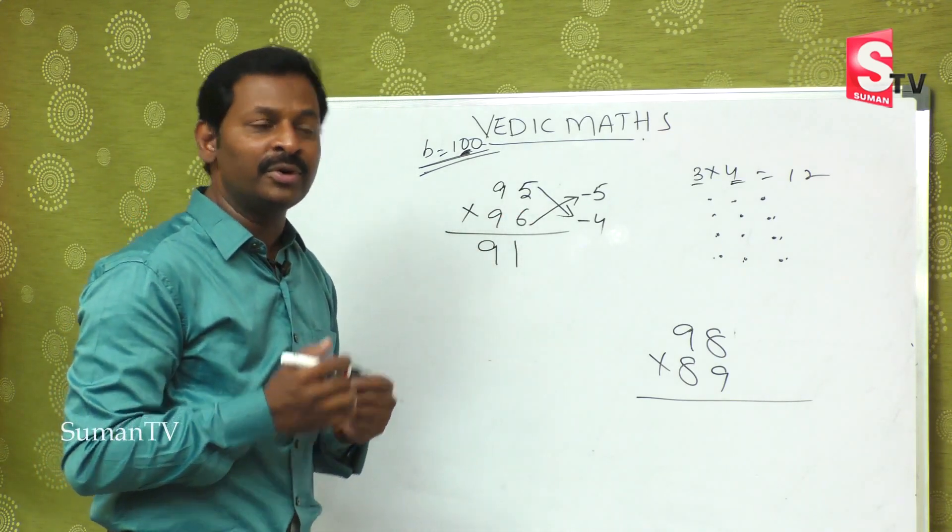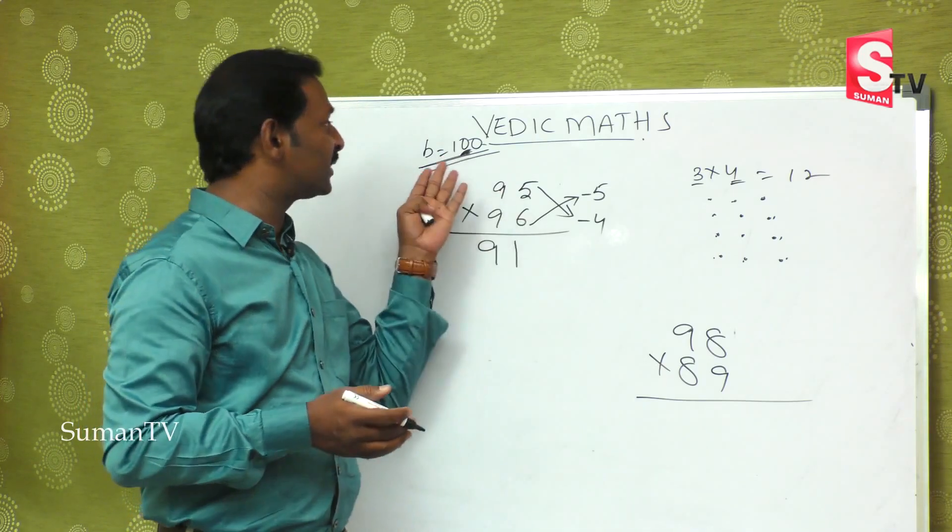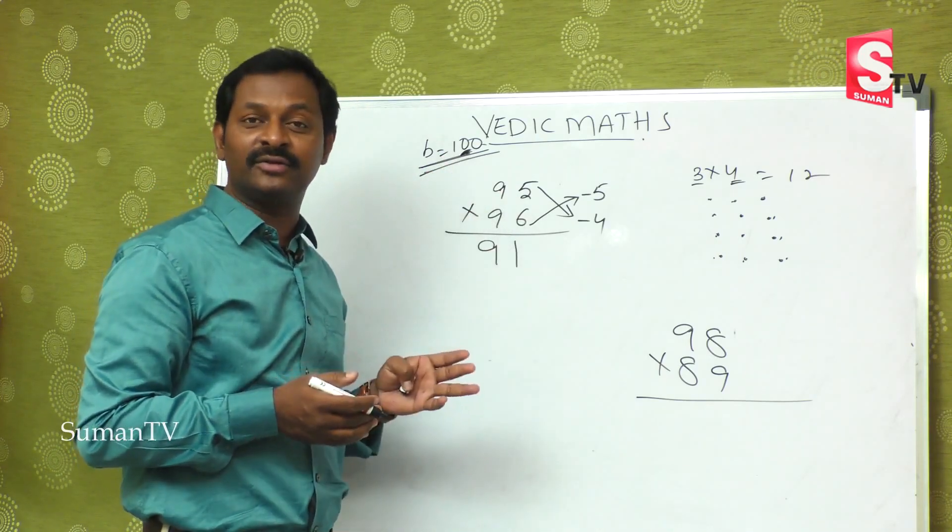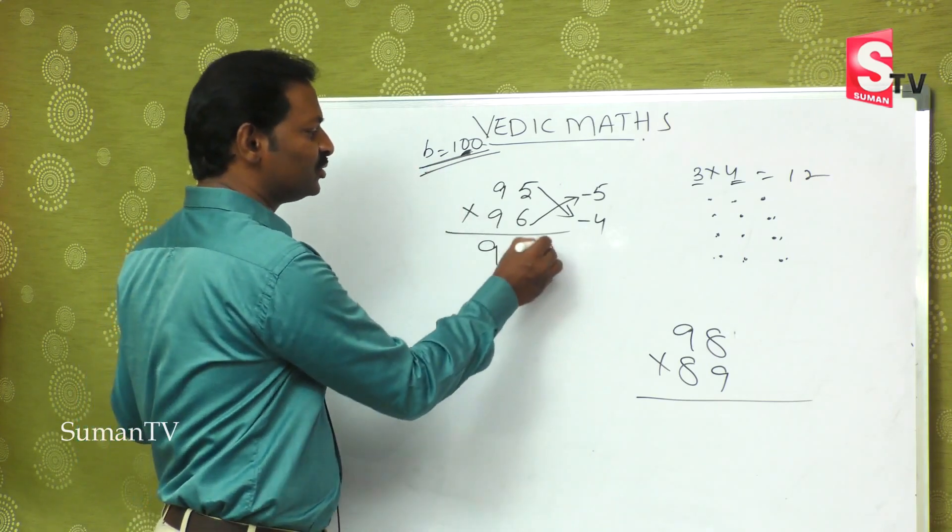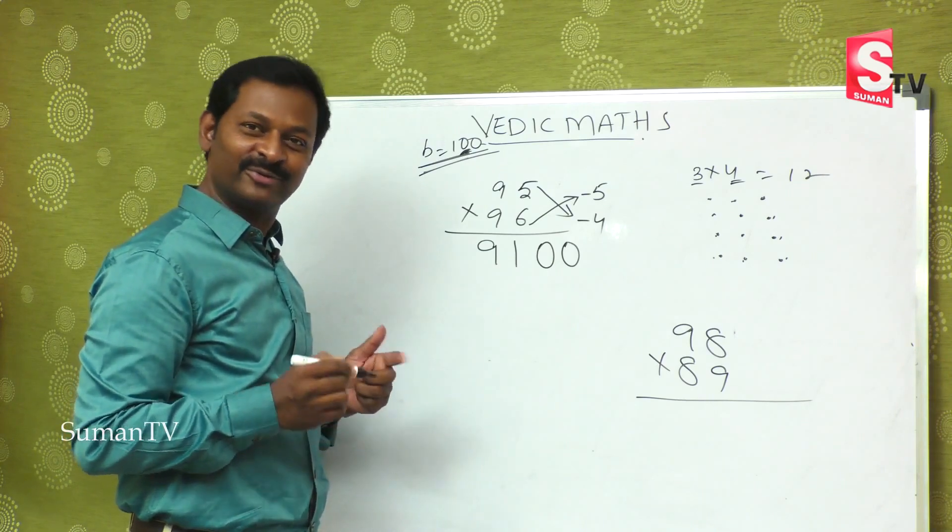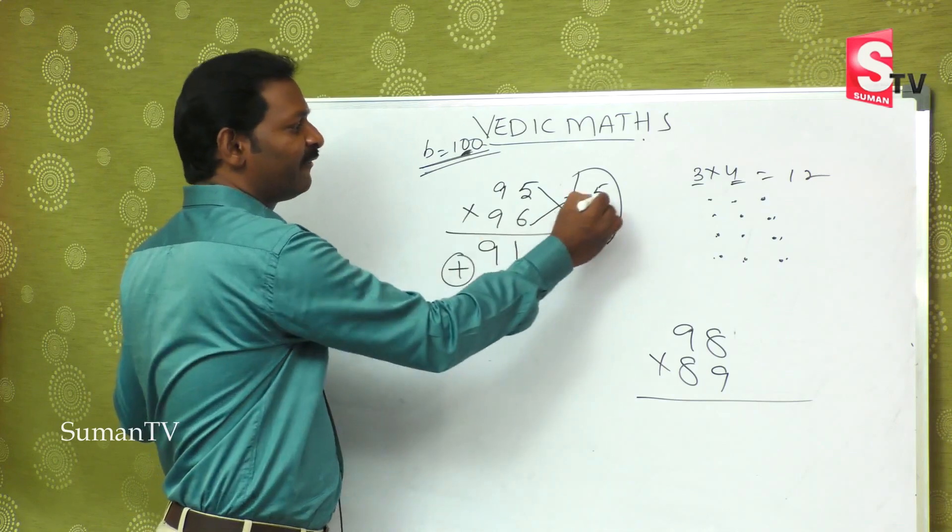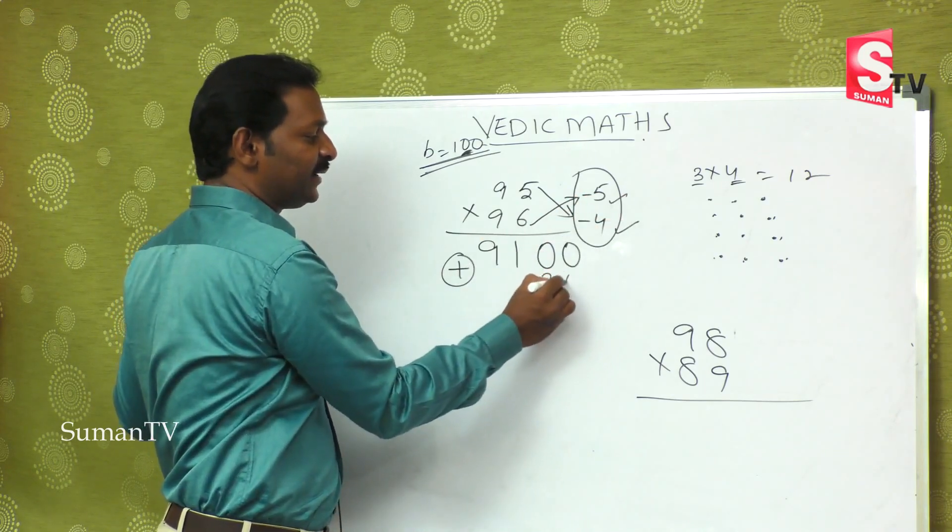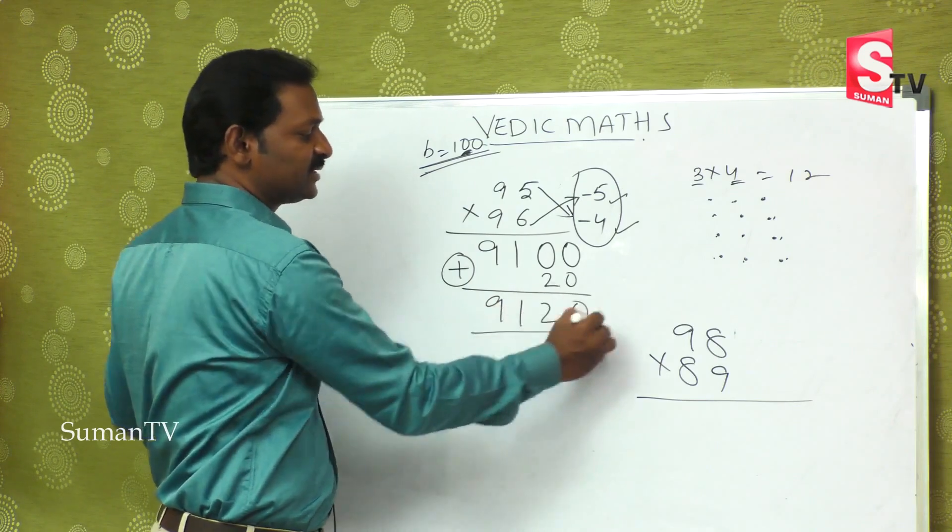In this method, second part of the answer is 0. Why is it 0? Because the base value is 10. Here it is 100. This base number is 100, it is 2 digits. Put 2 zeros. Why did you say? Minus into minus is plus, 5 × 4 is 20. The final answer is 9120. This is the right answer.